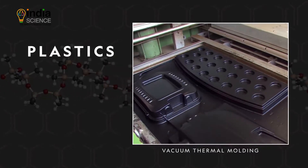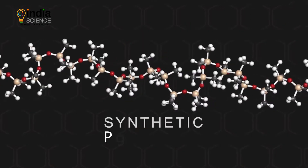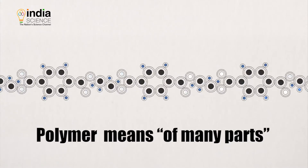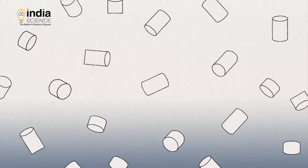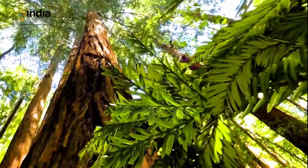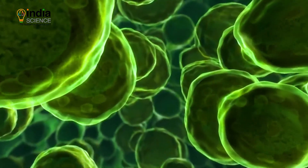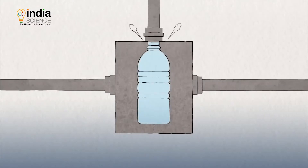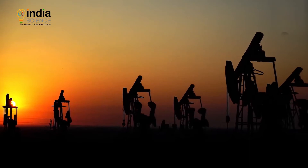The word 'plastic' originally meant pliable and easily shaped. With time, it became a name for a category of materials called synthetic polymers. 'Polymer' means 'of many parts,' and polymers are made of long chains of molecules. Nature is full of polymers, and the most common natural polymer is cellulose — the material that makes up the cell walls of plants. The problem started when humans learned how to make synthetic polymers.